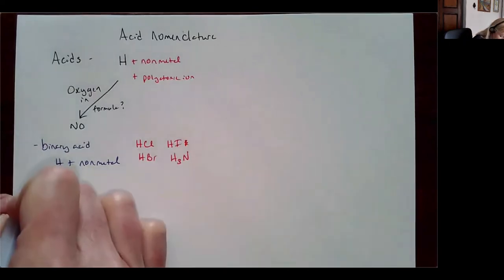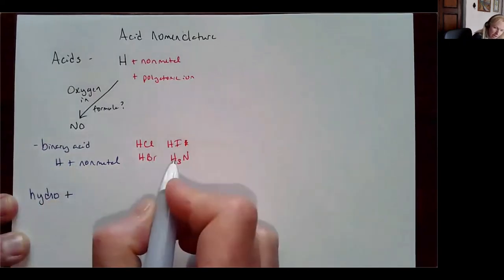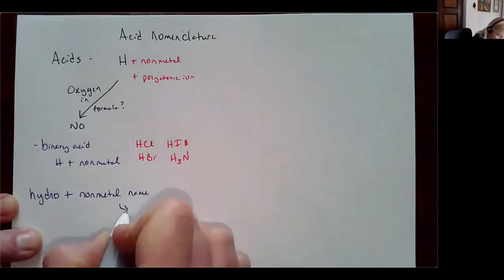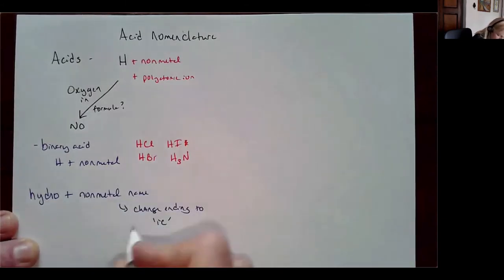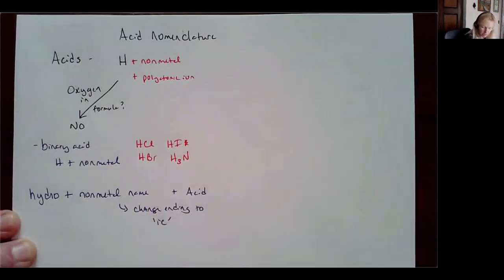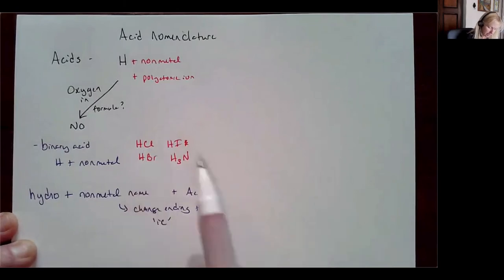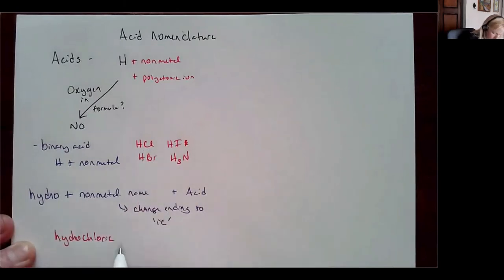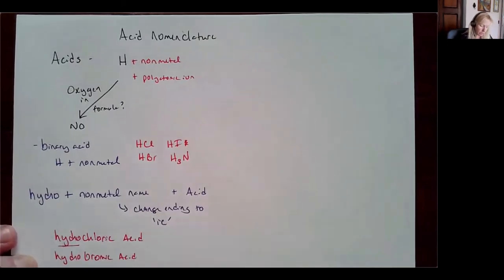For a binary acid, I start the name with 'hydro' plus the nonmetal, change the ending to '-ic', and add 'acid' at the end. So the nomenclature would be hydrochloric acid or hydrobromic acid. When you see 'hydro' in the name, that means there's no oxygen in that acid.